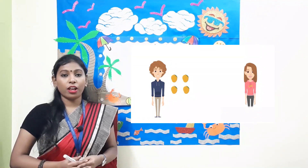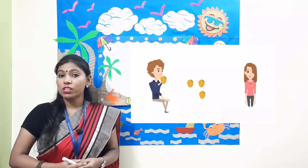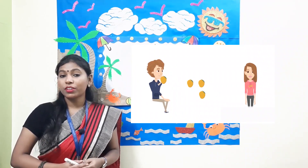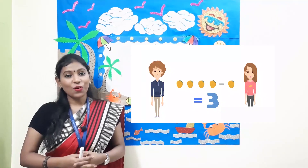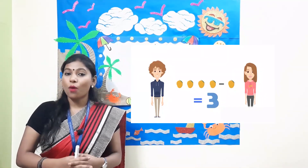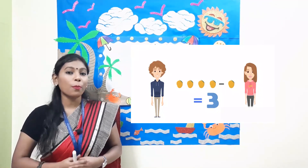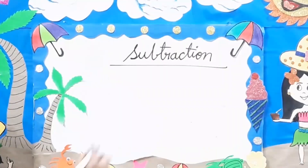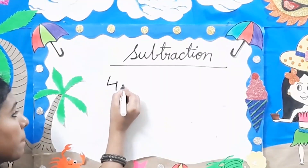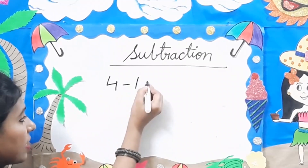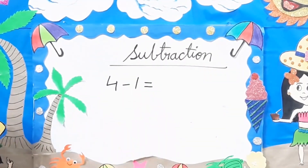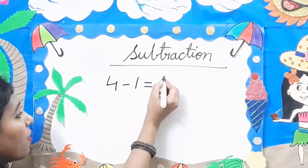For example, your mother gave you 4 mangoes and you ate 1 mango. Then how many mangoes are left with you? You will subtract it. So you will subtract 1 mango from 4 mangoes. 4 minus 1 is equal to 3.